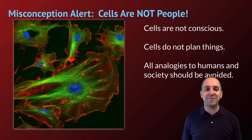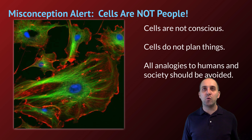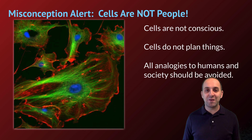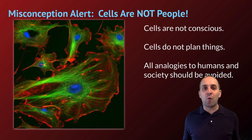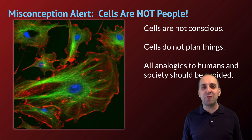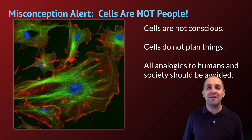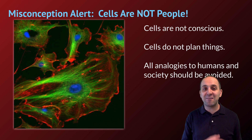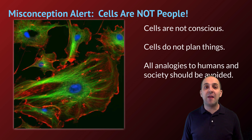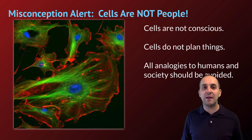One last misconception: cells are not people. It's easy to ascribe human-like emotions to cellular systems, but cells are not conscious — they are not planning things, they don't want things, and they have no conscious desires. For example, since the mitochondria carries out aerobic cellular respiration, people sometimes call it 'the powerhouse of the cell.' While informal analogies like this are common, in a formal setting — particularly on quizzes, exams, and certainly the AP exam — you need to avoid that entirely. The cell does not want or plan anything, and cellular structures are only roughly analogous to structures we see in human society.